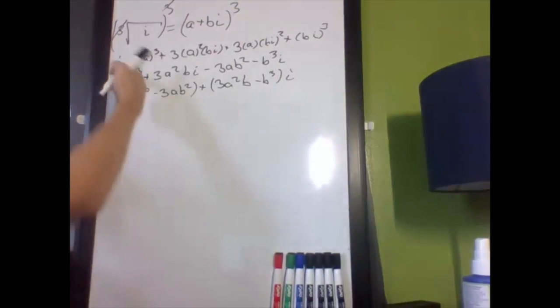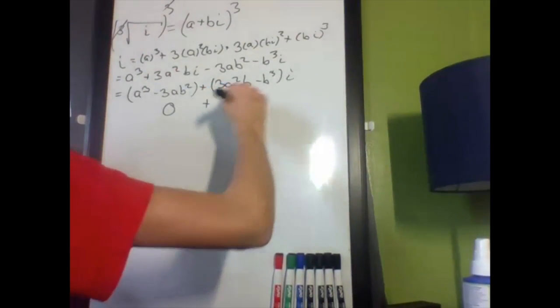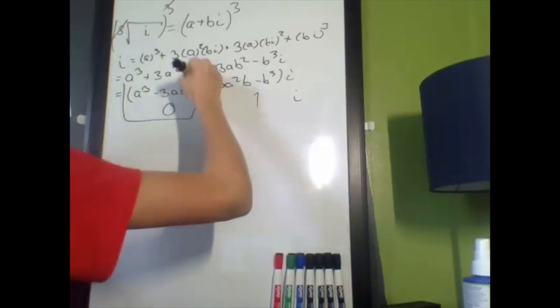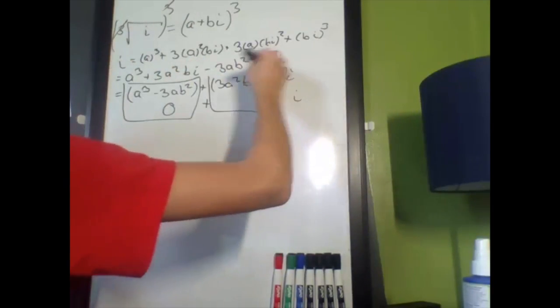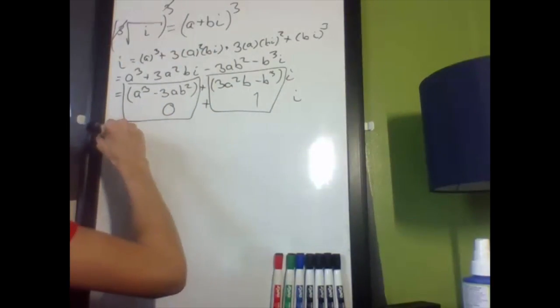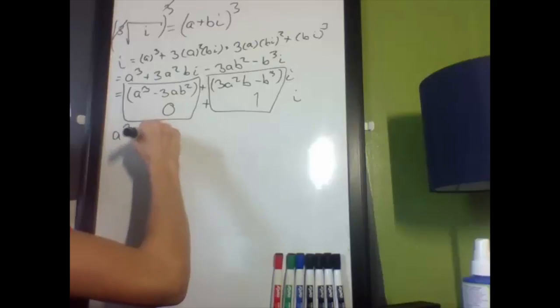Now let's separate this into its real and imaginary parts. So it's going to be a cubed minus 3ab squared, and then plus 3a squared b minus b cubed times i. Now, what is this equal to? i, or 0 plus 1i. So I'm going to set these two equal. Let's focus on this one first.